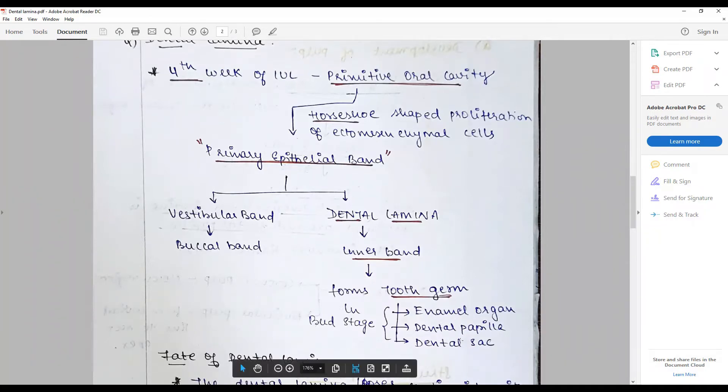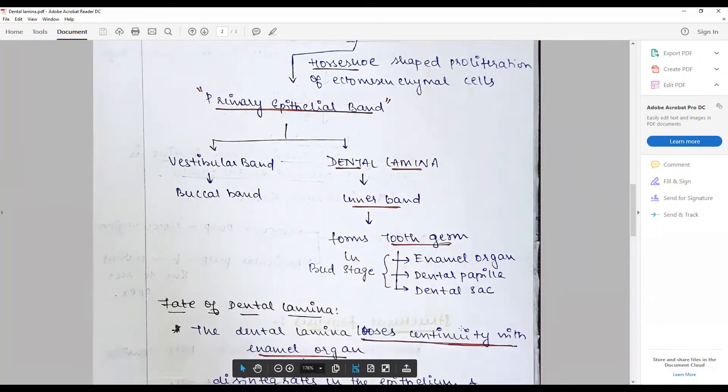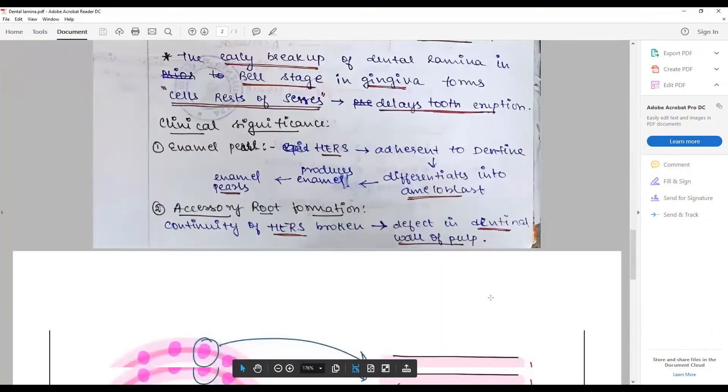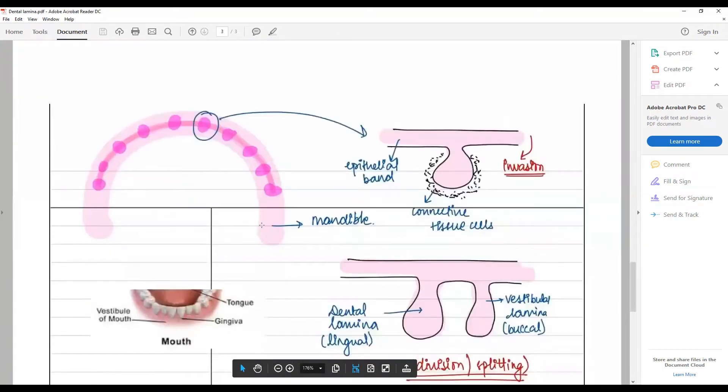The better thing would be this diagram: horseshoe shape, each one of these proliferations downward, epithelial band invasion into surrounding thickening of connective tissue that gives rise to this.